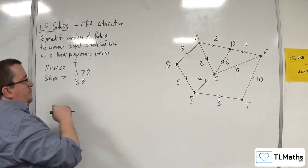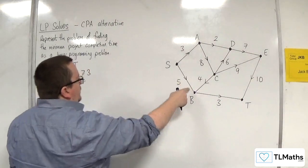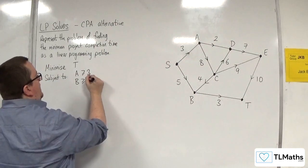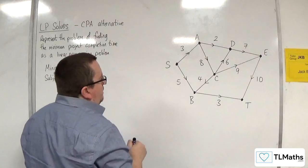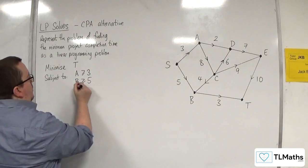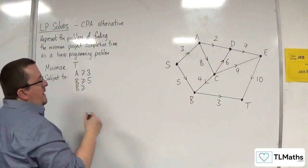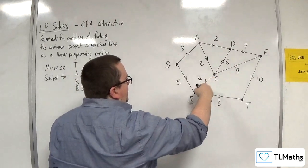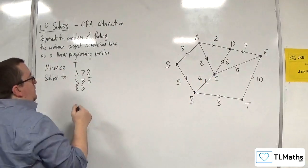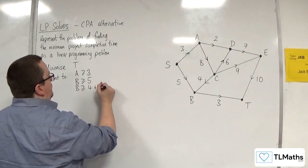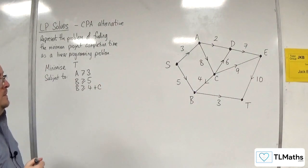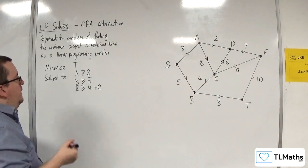For B, it's going to be 5. At least 5 hours need to complete that activity there. And we've also got, for B, this route coming in from C. So we're going to need 4 plus whatever value is at C.